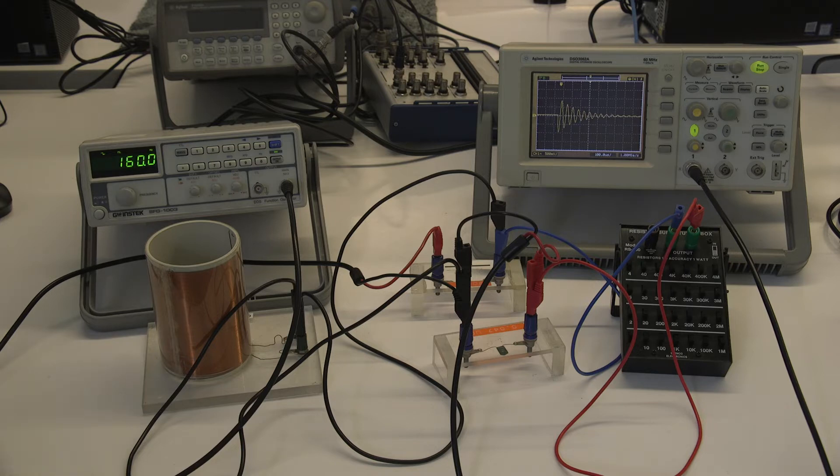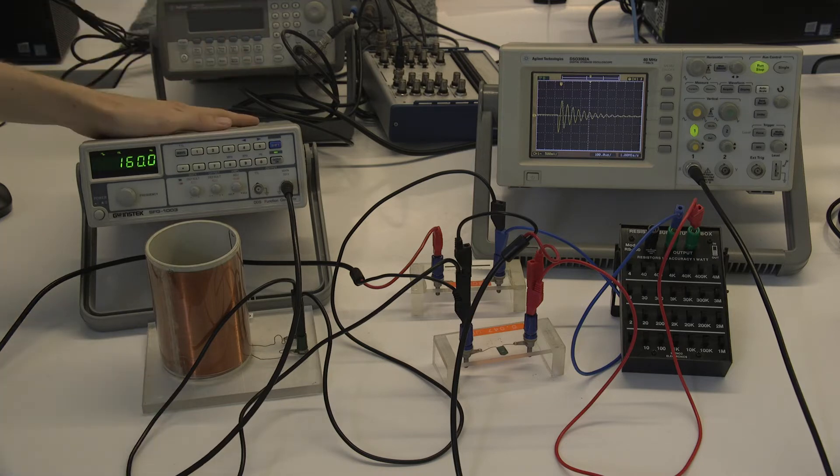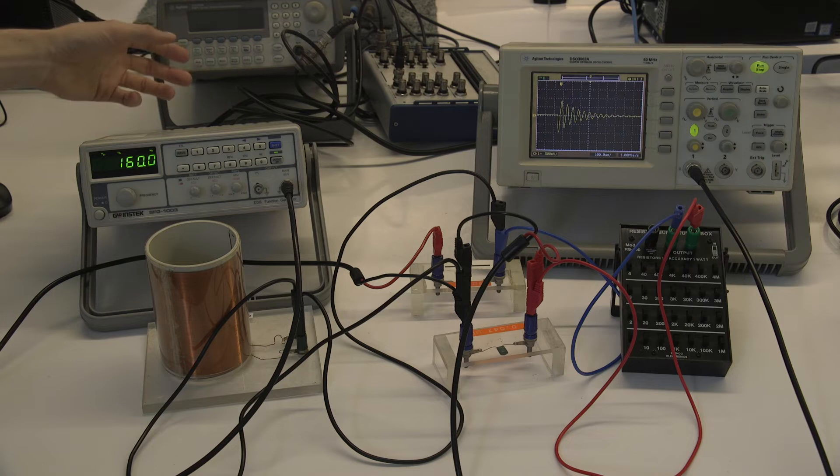The setup I've got here is for the first part of the experiment, which is the damped oscillator. So what we've got is a couple of things. First we have our frequency generator, and this is what you're using to output the AC signal that you're going to use to drive the circuit.